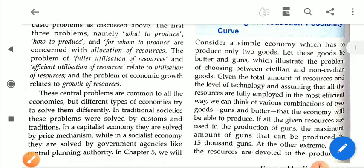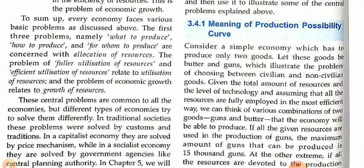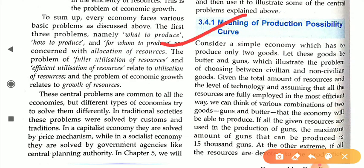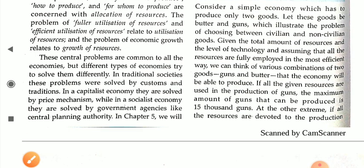We consider a simple economy that produces only two goods: butter and guns. This illustrates the problem of choosing between civilian and non-civilian goods, given the total amount of resources and the level of technology, and assuming all resources are fully employed in the most efficient manner.